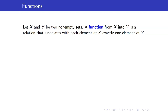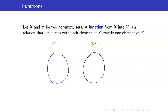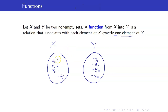We are now ready to discuss functions. Let X and Y be two non-empty sets. A function from X into Y is a relation that associates with each element of X exactly one element of Y. The definition says that every element in X should go to exactly one element of Y. So this here is a function because every element of X goes to exactly one element of Y.